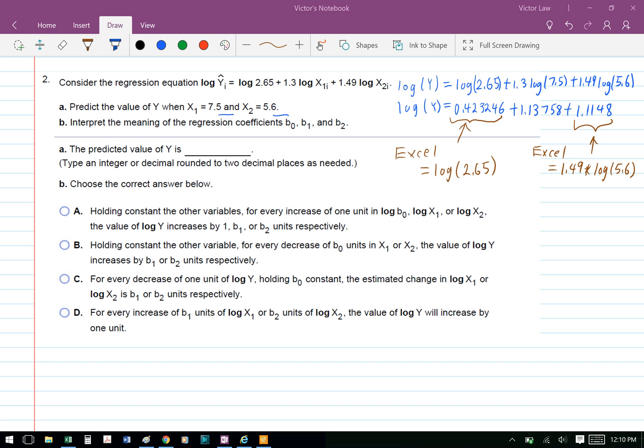For the second variable, we use Excel as well. We type equals 1.3 times log(7.5), and that gives us 1.13758.